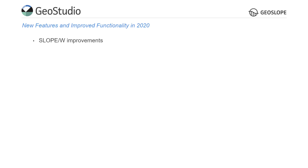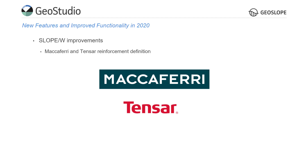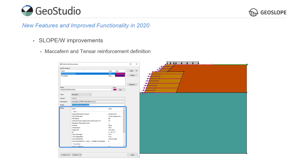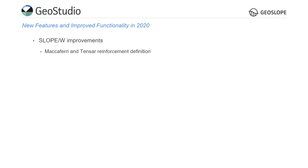Slope/W now offers greater reinforcement options. The Define Reinforcement dialog was updated to offer the option of establishing reinforcements based on vendor-specific products from MacAferry and Tensar. Users simply select the reinforcement vendor from the Type drop-down menu and the specific reinforcement product type from the Model drop-down. Given these selections, the reinforcement parameters are automatically defined. This functionality was developed in partnership with MacAferry and Tensar to ensure accurate representation of their products.